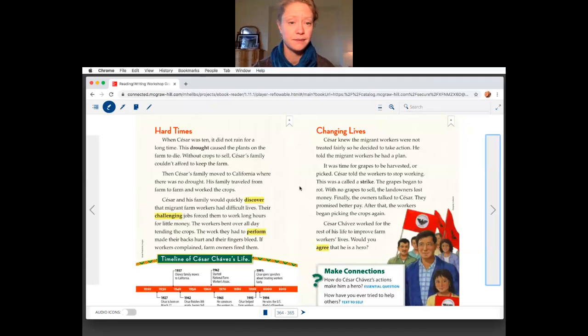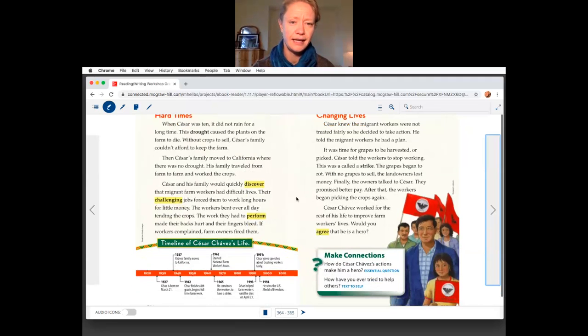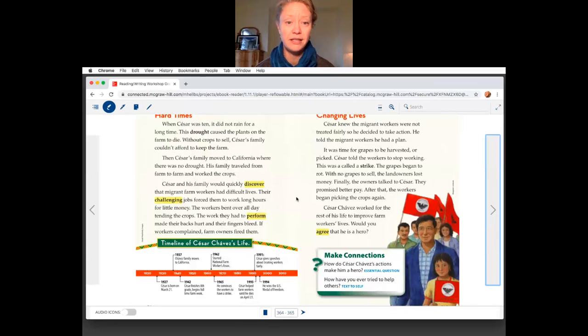Hard Times. When Cesar was 10, it did not rain for a long time. This drought caused the plants on the farm to die. Without crops to sell, Cesar's family couldn't afford to keep the farm. Then Cesar's family moved to California, where there was no drought. His family traveled from farm to farm and worked the crops.